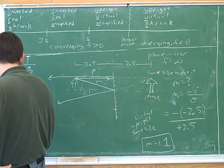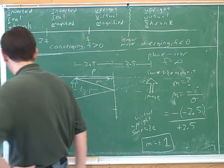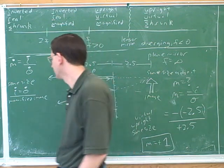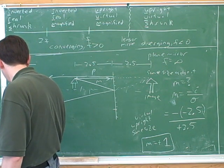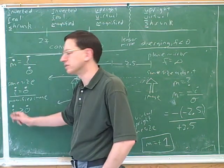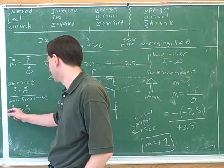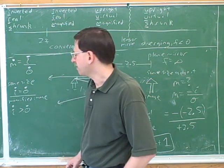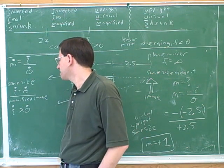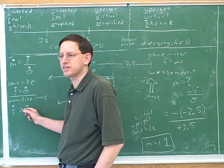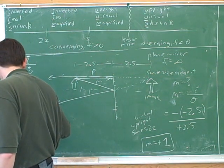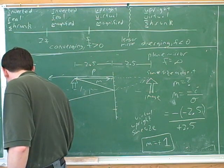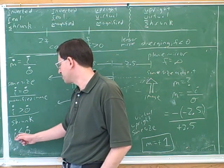When will the image be bigger than the object? When will we have a magnified image? When the object distance is smaller than the image distance — in magnitude. We don't want to focus on the signs here because that has to do with real and virtual. A magnified image is one where the image distance is bigger in magnitude than the object distance. And a shrunk image is when the image distance magnitude is smaller than the object distance magnitude.